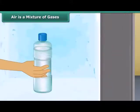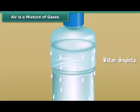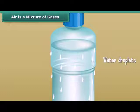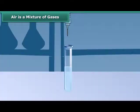When you take out a water bottle from the freezer, some water droplets appear on the outer surface of the bottle. Where do the water droplets come from? Is water leaking through the bottle? No, it's not the case. Water vapor present in the air turns back into liquid when it touches the cold outer surface of the bottle. This proves air contains water vapor.